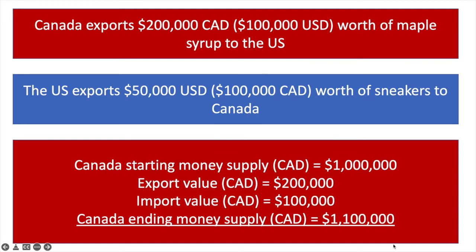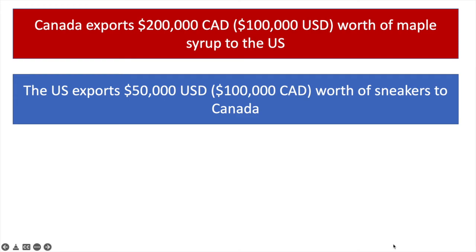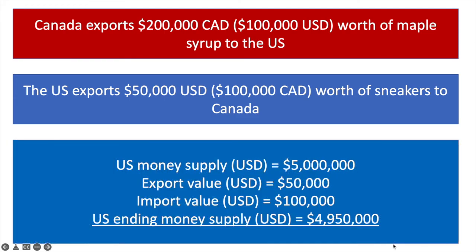Now let's look at what happens in the US. The US money supply started at 5 million US dollars. They exported 50,000 US dollars worth of goods and imported 100,000 US dollars worth of goods. So more money has left than entered the United States, and the US ending money supply is 4.95 million US dollars. You can see the money supply in the US has fallen.